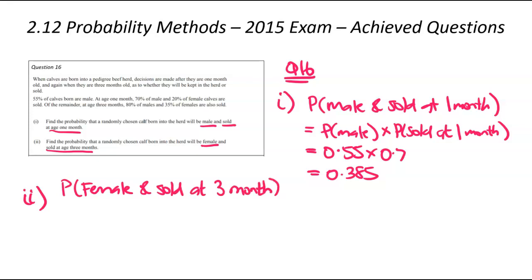We're trying to find the probability of female and sold at three months. It sounds like there's two events happening, but there's actually three events happening. For it to be sold at the third month, it had to have not been sold at the first month. That's our third part.